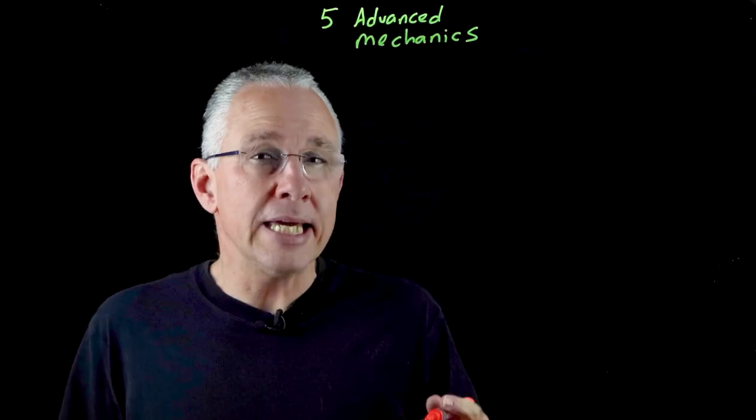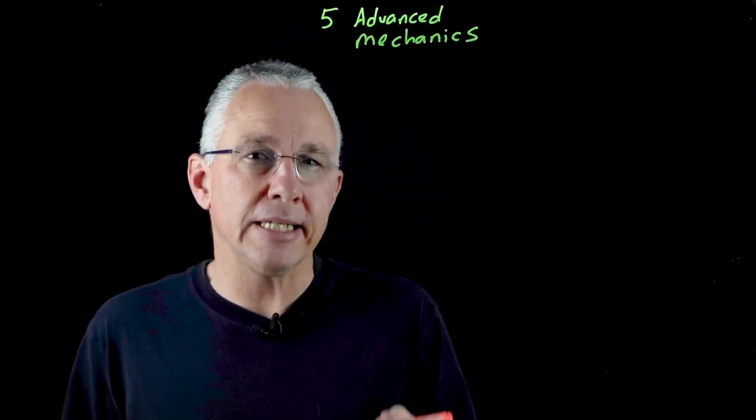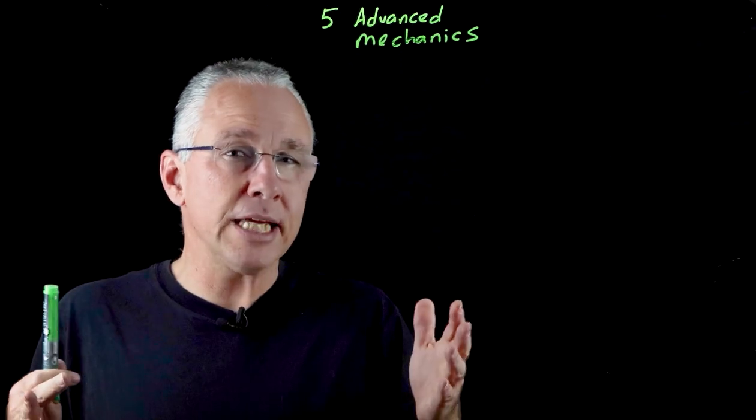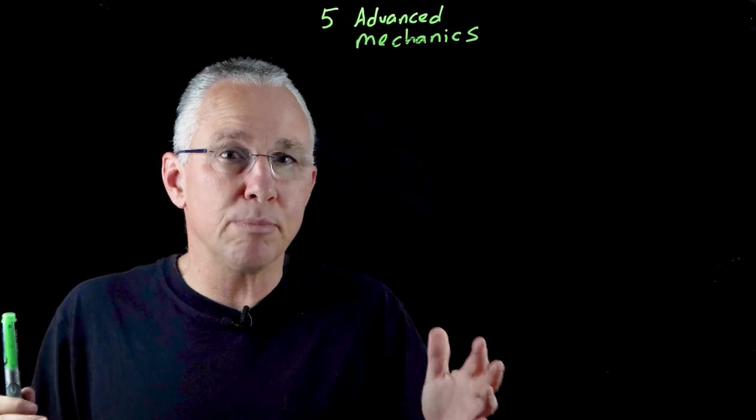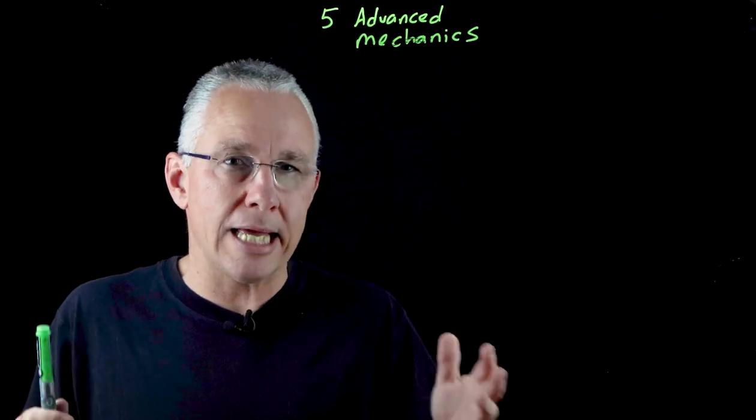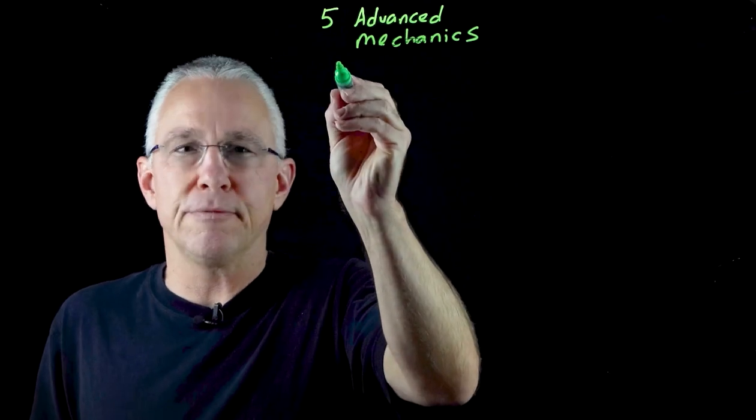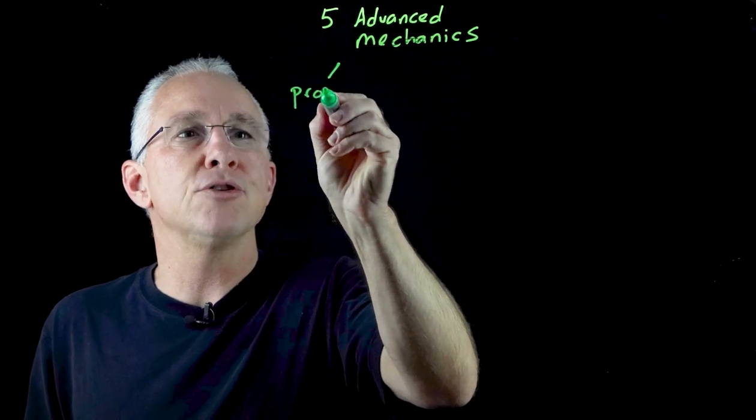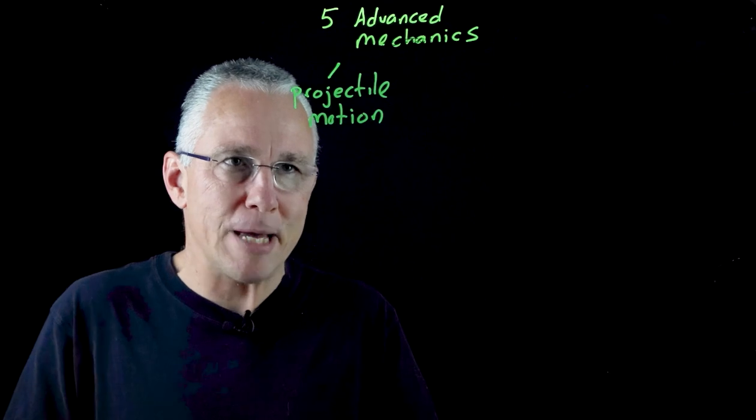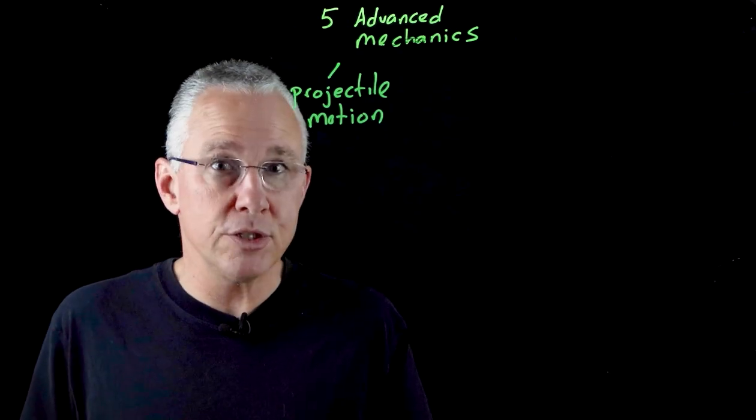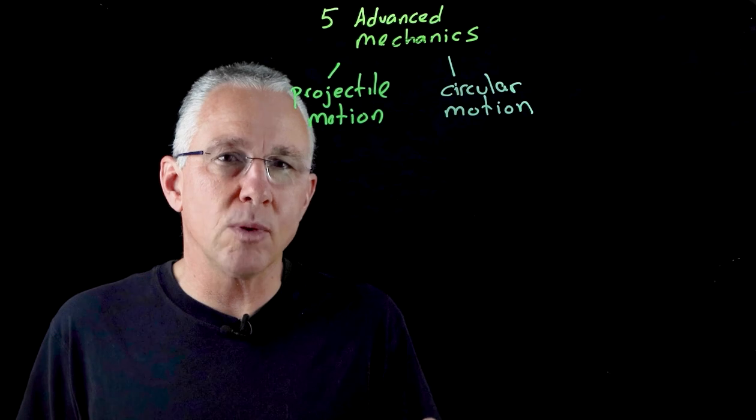Module 5 is broken down into three distinct inquiry questions. The first inquiry question is: how can models used to explain projectile motion be used to analyze and make predictions? I'm going to simplify it by writing 'projectile motion.' The second inquiry question asks why objects move in circles.